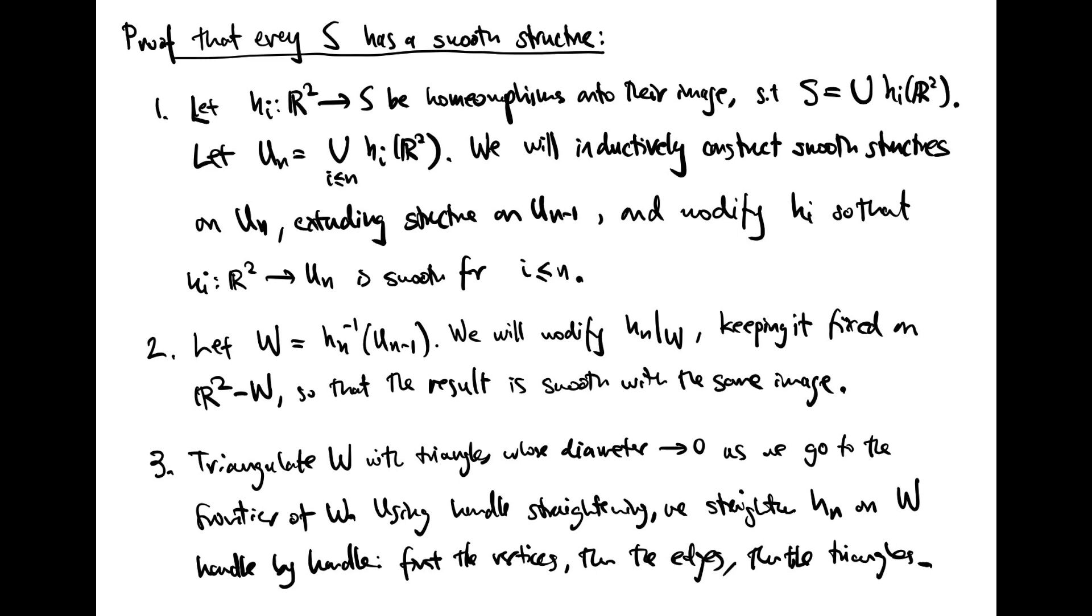Once we've done this, we will have built a smooth structure on all of the H_i of R², which is to say, on all of S. Let W be the inverse of U_(N-1) under the map H_N. What we're going to do is modify the map H_N restricted to W, keeping it fixed on the complement of W, so that the result is smooth and has the same image.